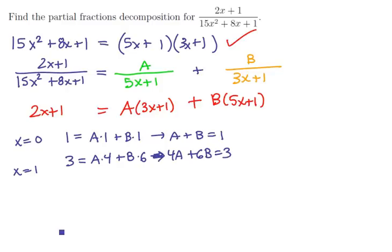We can solve this system using row operations. We make the augmented matrix and start row reducing. Scaling the first row by -4 and adding to the second gives [0, 2, -1]. Then scaling the first row by 2 gives [2, 2, 2] with bottom row [0, 2, -1].